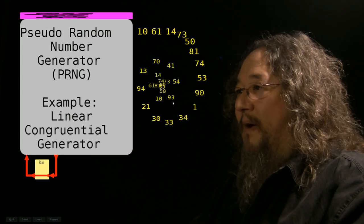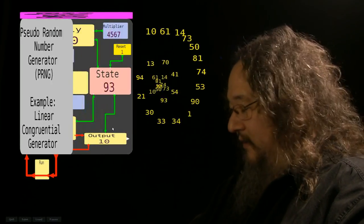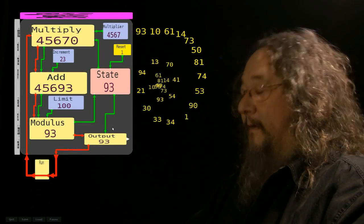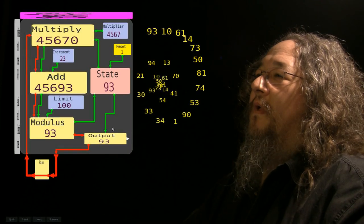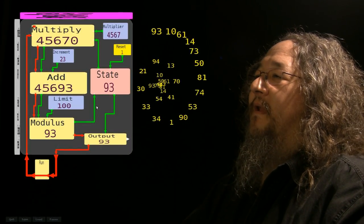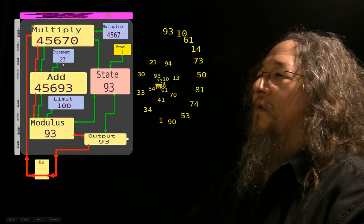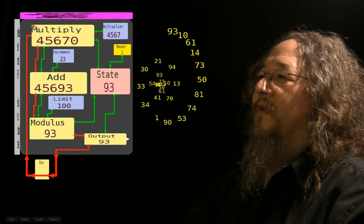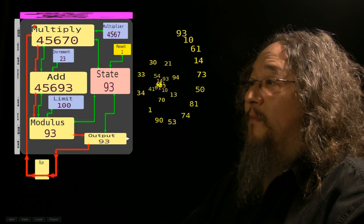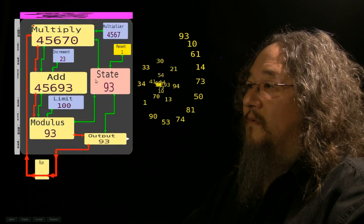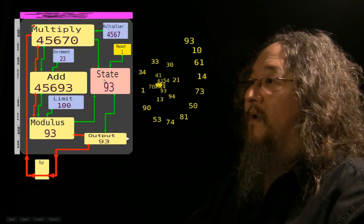But still, let's pop the hood again and actually see what's going on inside here. Single-stepping it now. So this is confusing looking, but it's really very simple. We've got this red star that says what's going to happen next. The first thing is we're going to do a multiplication. What do we multiply? This number, 4567, times this number, ninety-three.